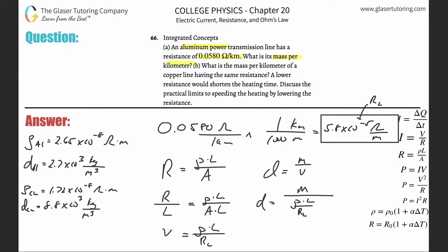This is going to be resistivity times length, all divided by my resistance per length. So now let's clean this up a little bit. Actually, it's fairly straightforward. We don't have to clean that up. We want to solve this for mass per length, which might get a little confusing with the algebra. So let me just clean it up.